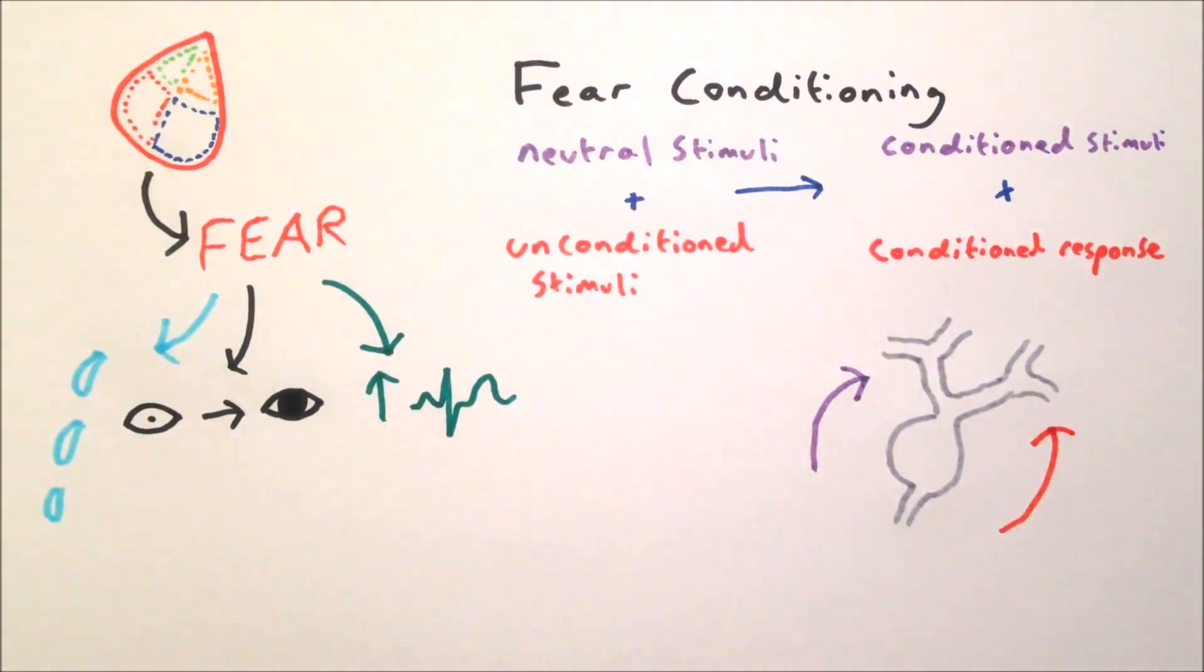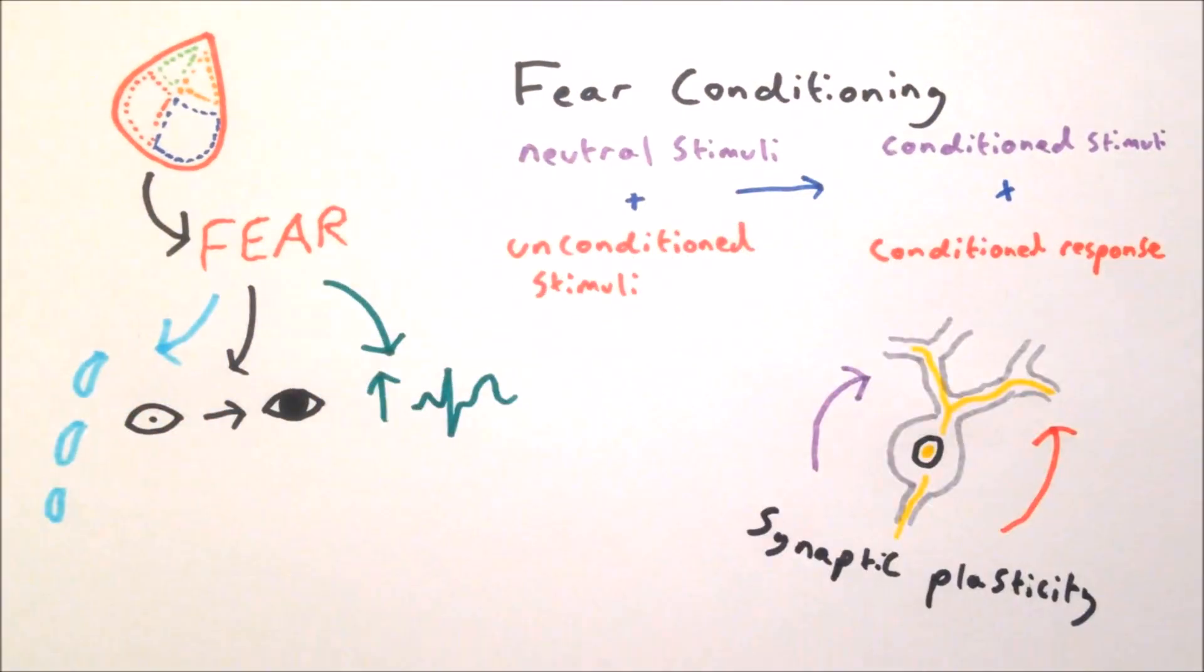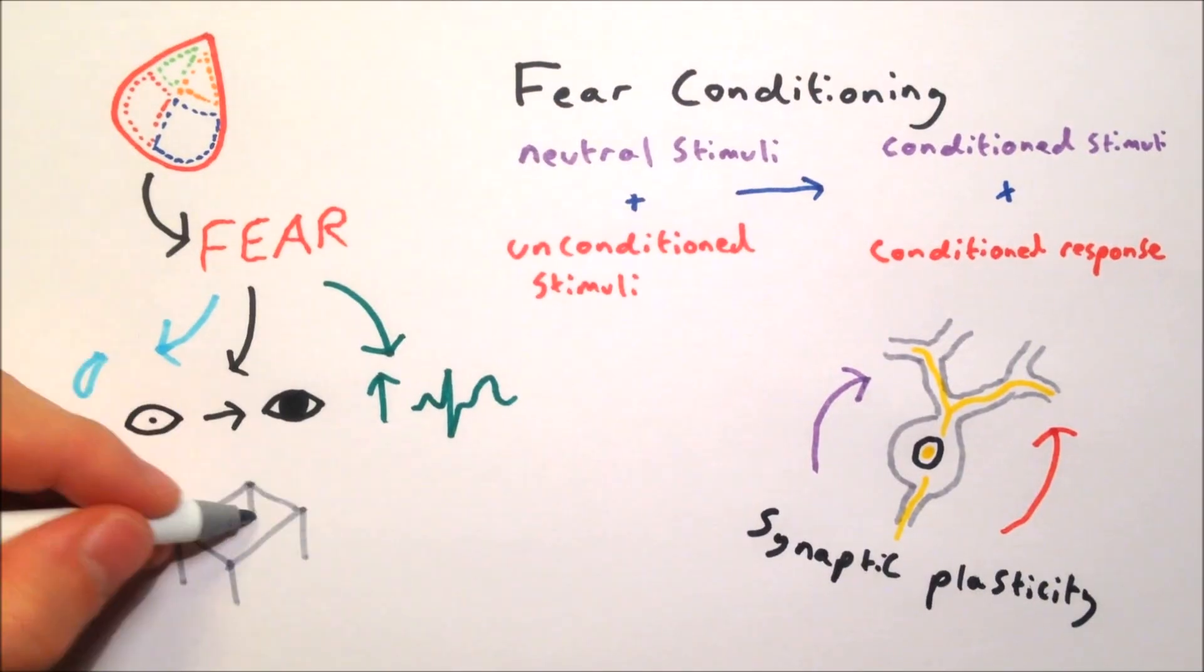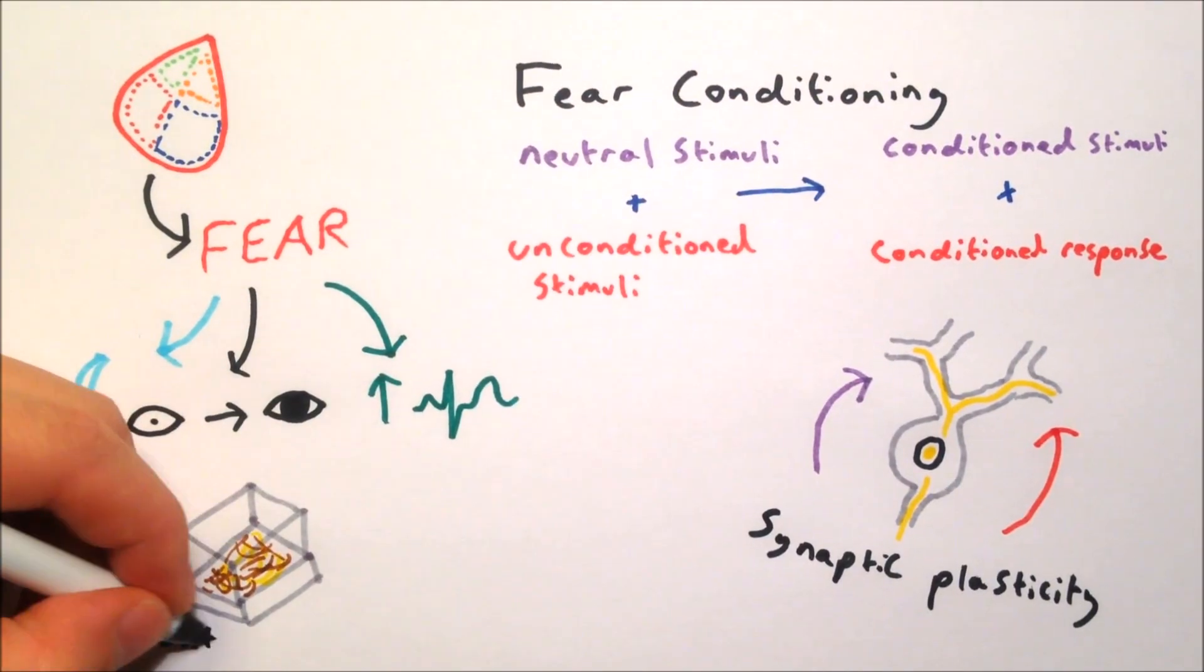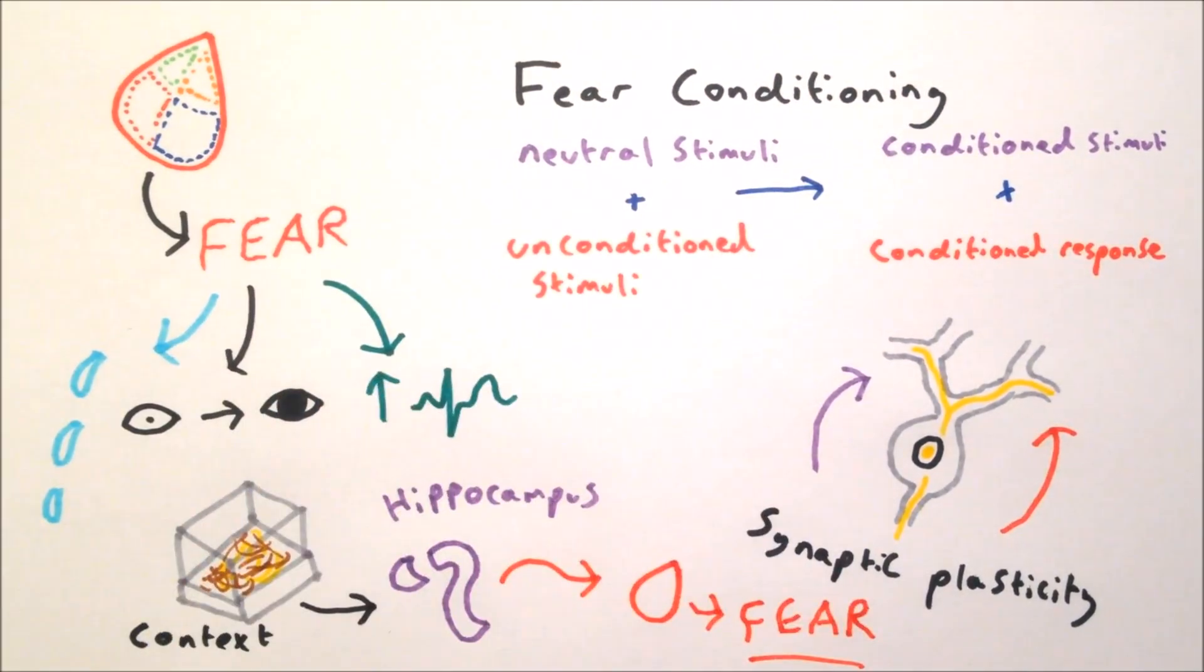In fear conditioning, synaptic plasticity allows a weaker sensory stimulus to trigger a fear response when paired with an unpleasant stimulus. The amygdala also interacts with other brain areas, such as the hippocampus, to allow context to affect our expression of fear.